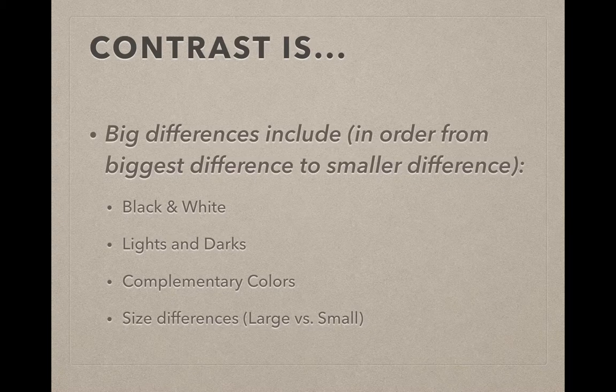In the second layer, you could have lights and darks — a really, really light version of a color versus a really, really dark version of a color — which can give you almost the same contrast as a black and white image or object.